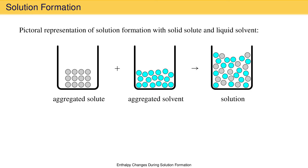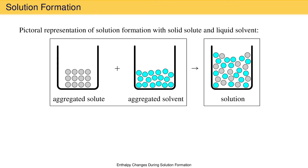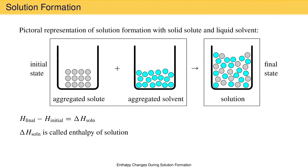These images show a change from initial state to final state. Everything on the left of the arrow is the initial state; the solution on the right is the final state. The change in enthalpy that occurs during this process is the enthalpy of the final state — the enthalpy of the solution — minus the enthalpy of the initial state, the combined enthalpy of the aggregated solute and the aggregated solvent. The symbol for this difference is delta H sub Soln, and we call it either the enthalpy of solution or the heat of solution.